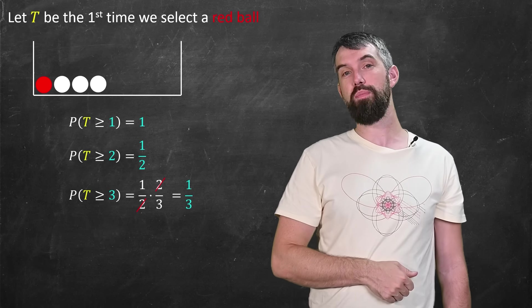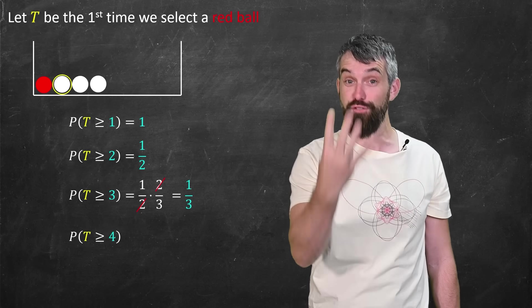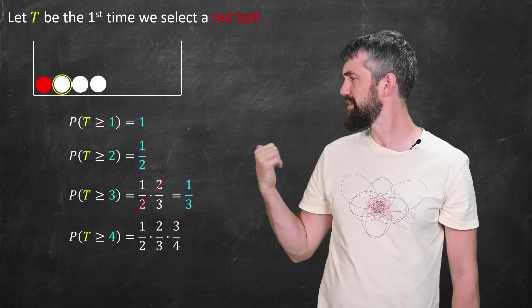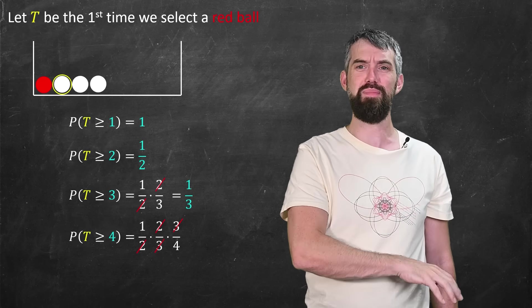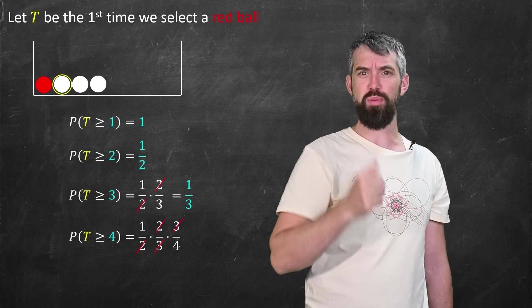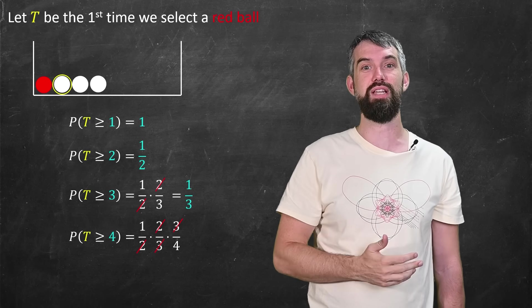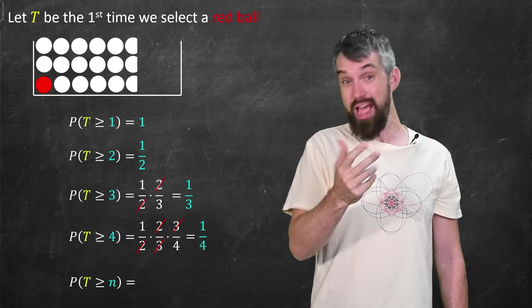But let's keep going. So now we have this extra white ball. What's the probability it takes at least four steps? It's the same probability that we had previously, but now I have to avoid the red ball one more time. Three white balls, four total. I multiply by three quarters. Everything cancels nicely and I get one quarter.